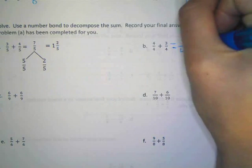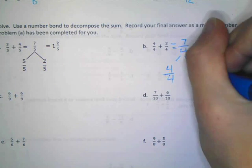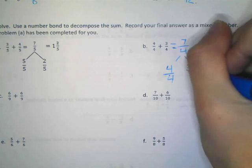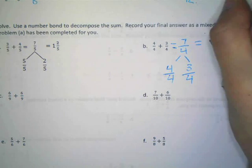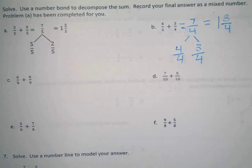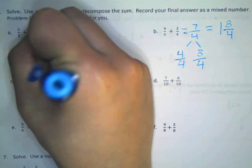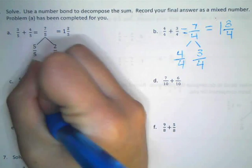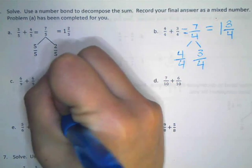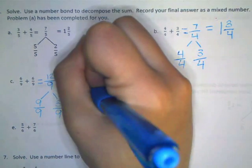All right. Six. Solve. Use a number bond to decompose the sum. Record your final answer as a mixed number. Problem A has been completed for you. Just like we were doing, right? Yeah. All right. So let's scooch over to B. Four-fourths plus three-fourths is? Seven-fourths. Seven-fourths. Which can be split up into what? Four-fourths. Four-fourths and what? Three-fourths. Which is the same as? One and three-fourths.